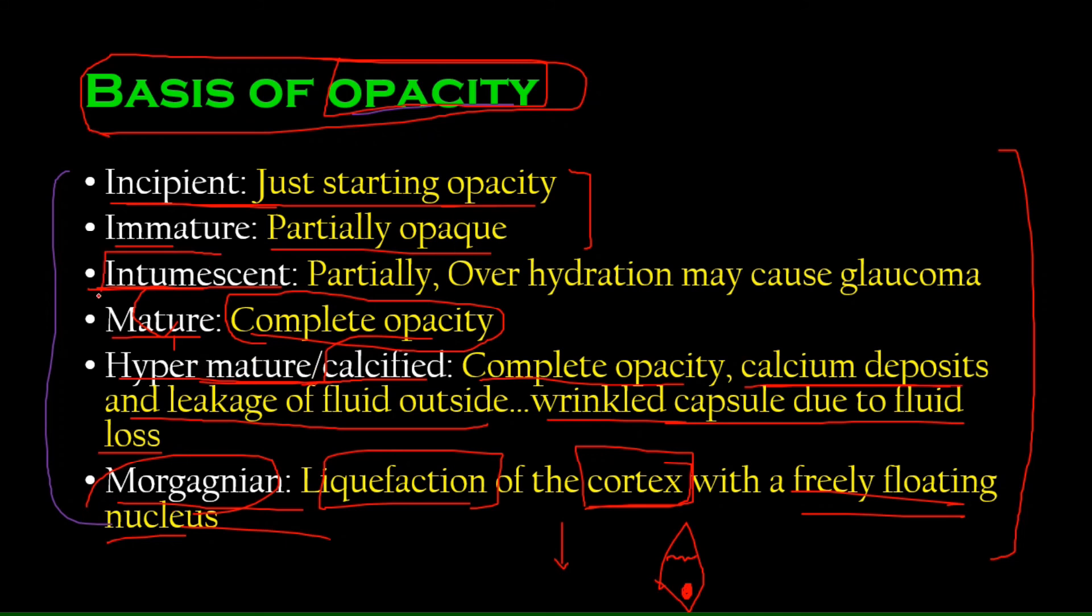And now we come towards the intumescent kind of cataract. Well, again, it's a partially opaque cataract just like incipient and immature. But here's a little feature about it. It causes glaucoma. It can cause something called a close angle glaucoma or angle closure glaucoma. And what happens in intumescent cataract is that there is overhydration. Remember, I said that the lens has 70% of water. So let's assume you insert a bit of more water inside the lens. As a result, it swells up. And when it swells up, it can cause glaucoma. And how would that cause glaucoma? That is a complicated topic in its own. We will be explaining, I promise I'll explain this when we're studying glaucoma, which is the next chapter.